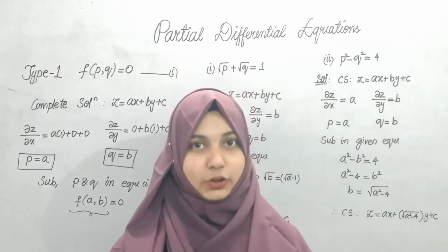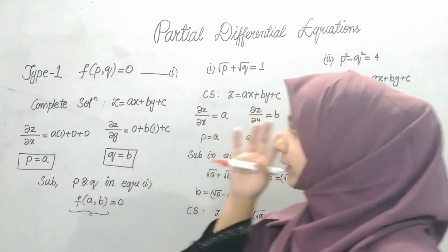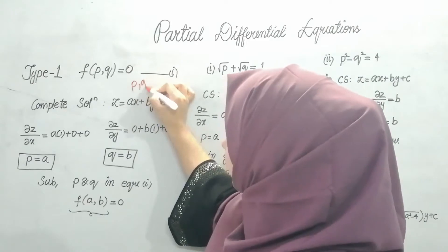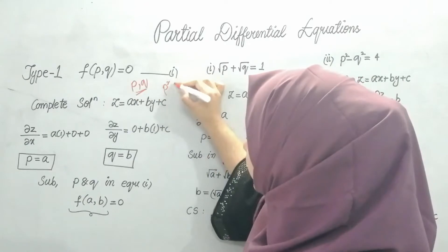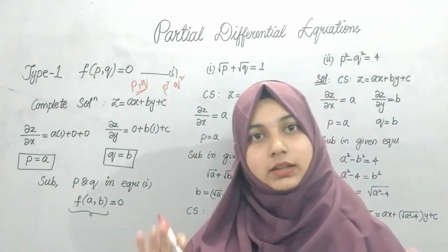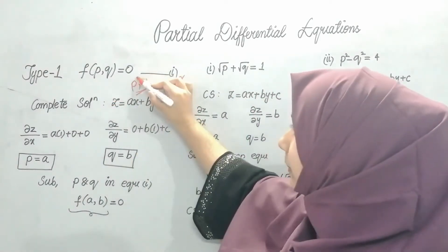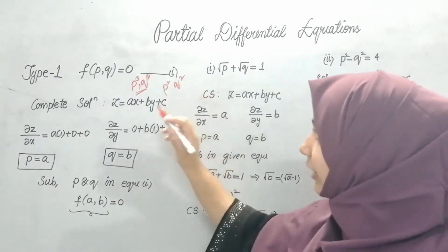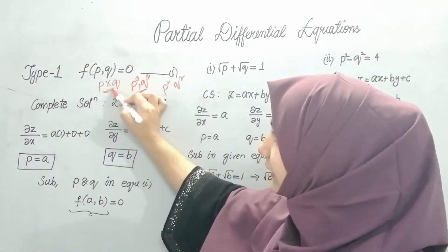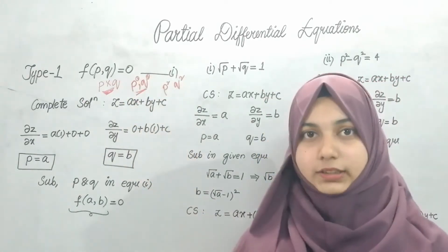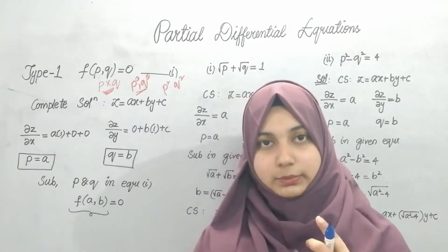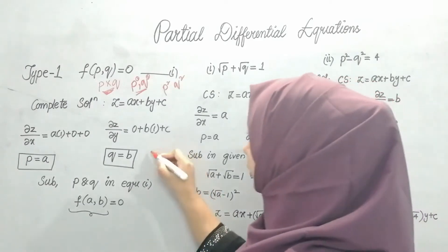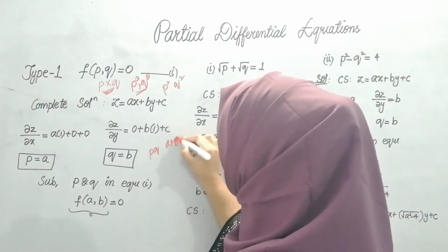Assalamualaikum everyone. In this video we'll see nonlinear differential equations — Type 1. A PDE is linear if P and Q have powers of only one and cannot have products like P into Q. If the degree is more than one, or if you have products of P and Q, it will be a nonlinear PDE.